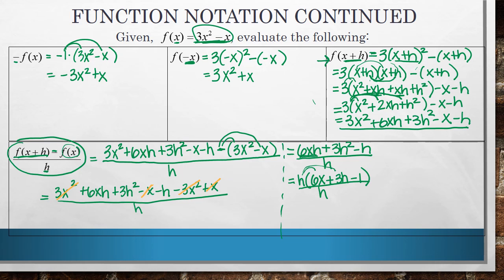And now that I've actually pulled that h out, now I can cancel it from the top and the bottom, and I'm left with an answer of 6x plus 3h minus 1. So I took all of this grossness on the first line, and I made it so much prettier. Let's do a couple more examples of these.